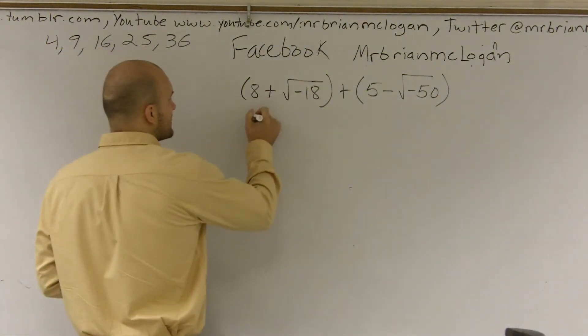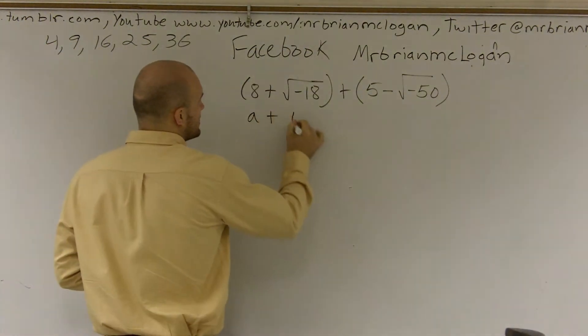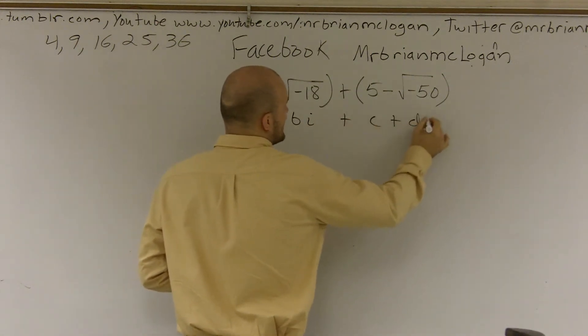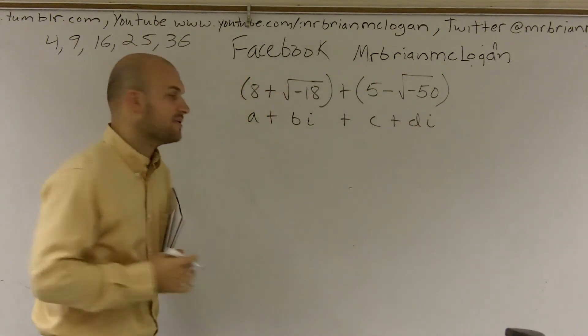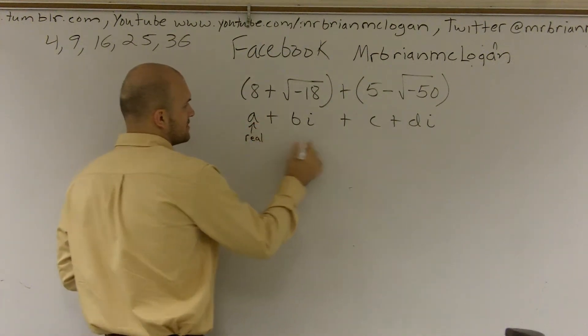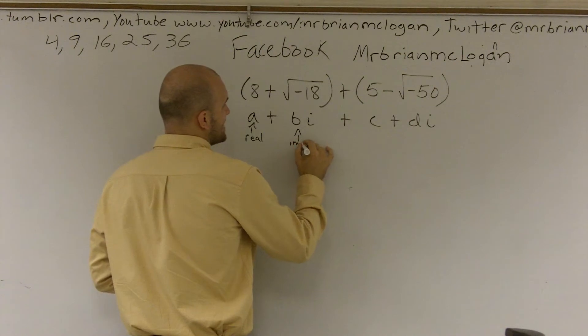First thing we need to remember when we're adding complex numbers is we can put them in the form of A + Bi + C + Di. And when adding complex numbers, you add these, what we call the real parts, and here's what we call the imaginary.